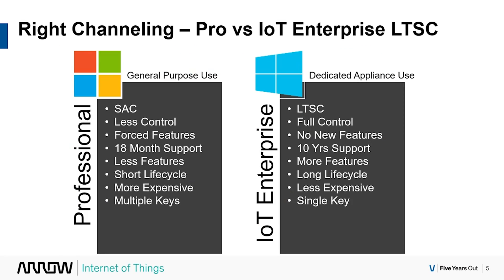Taking a direct comparison with Pro on the left and IoT Enterprise on the right: Pro falls under the semi-annual service channel, meaning less control over Windows updates, new features forced down to your system, a very short 18 to 30-month support window, fewer features, a short lifecycle, it's more expensive, and you have to deal with multiple keys. In comparison, as an OEM you want IoT Enterprise LTSC — the long-term service channel. You get full control over Windows updates, no new builds or new features forced on you, 10 years of support, a long lifecycle, and it's less expensive — with a single key.